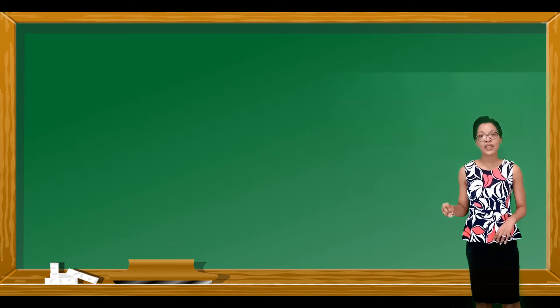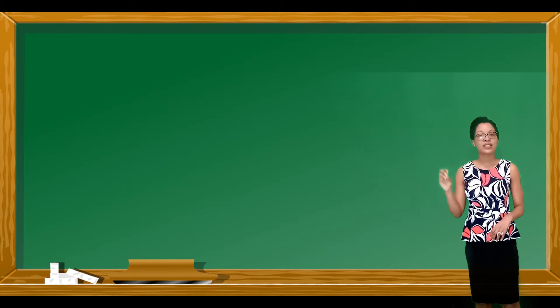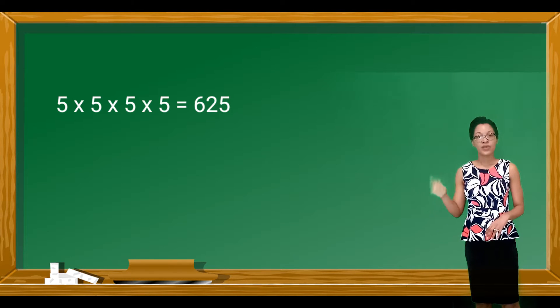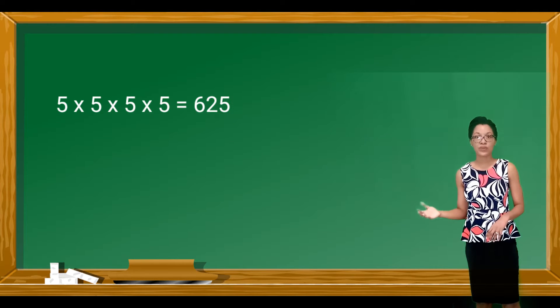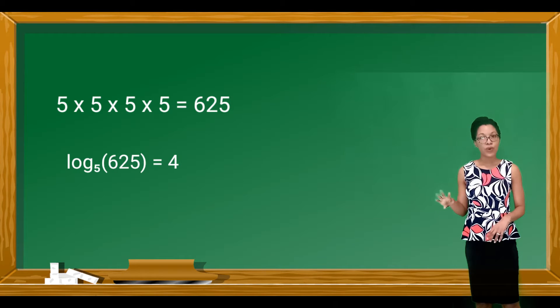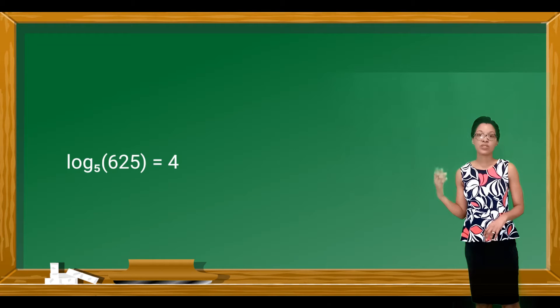How many 5's do we multiply to get 625? 5 by 5 by 5 by 5 would be 625. The logarithm is 4. Log base 5 of 625 is equal to 4.